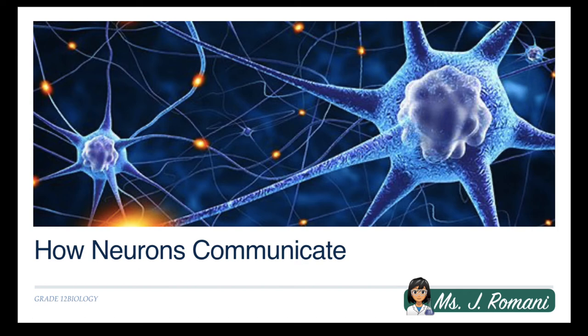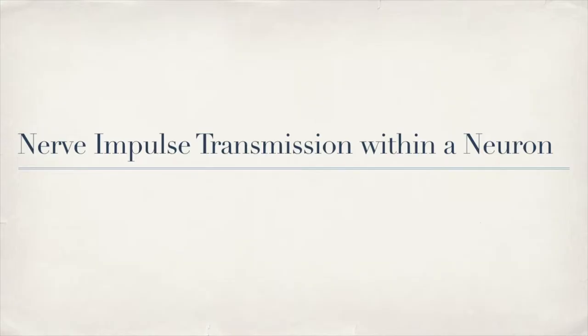Welcome back, guys. For this part of the lesson we're going to be taking a look at how neurons communicate with each other. We'll start by looking at how nerve impulses are transmitted within a neuron, and then in the second part we'll look at how nerve impulses are transmitted from one neuron to another.